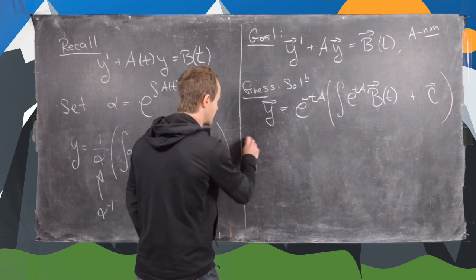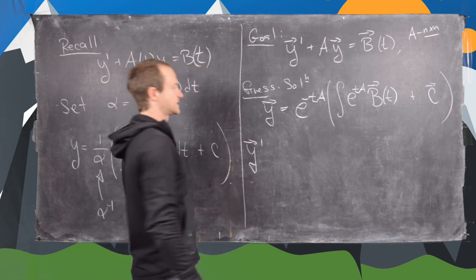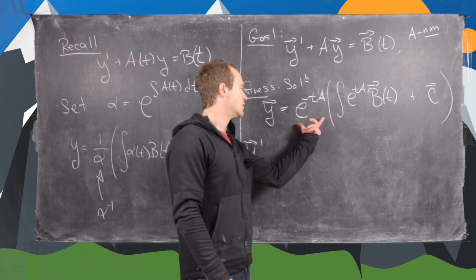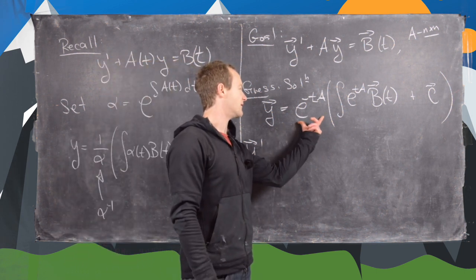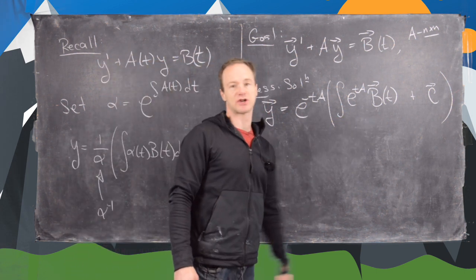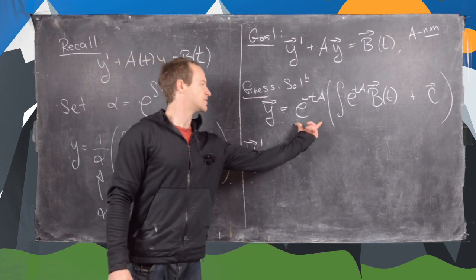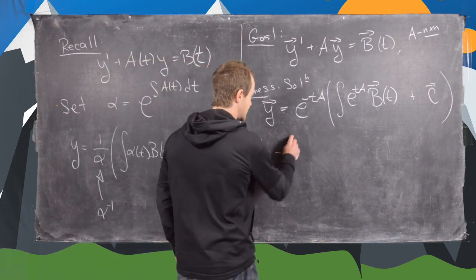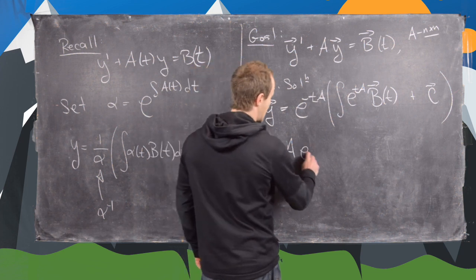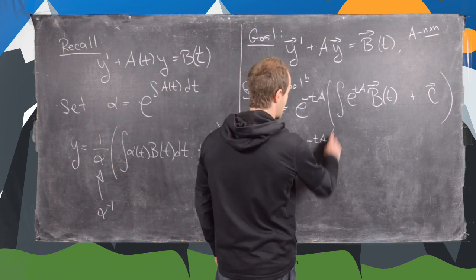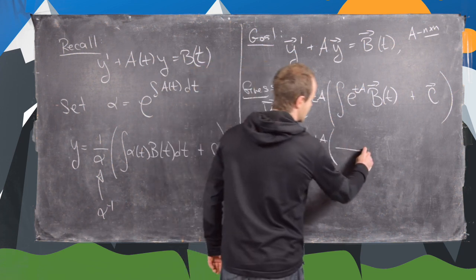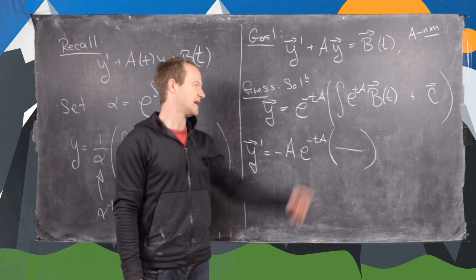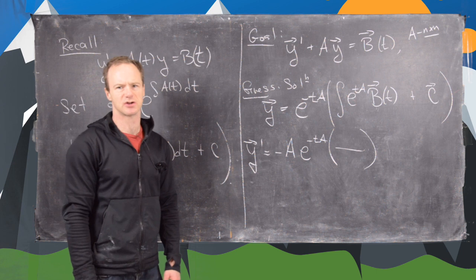Let's take the derivative of this. We can use the product rule, taking the derivative of each part separately. The derivative of e to the minus tA is going to be minus the matrix A times e to the minus tA, times all of this stuff in parentheses.